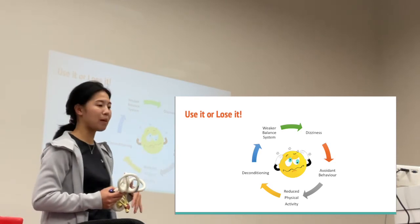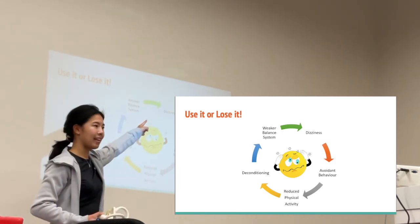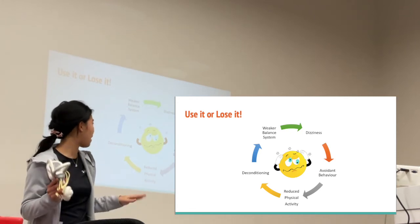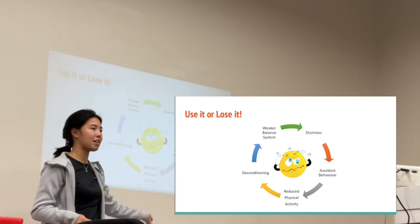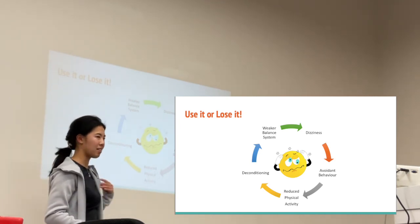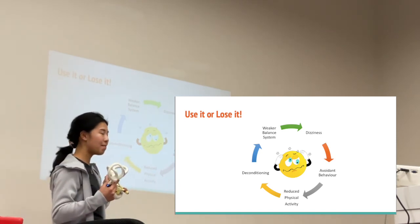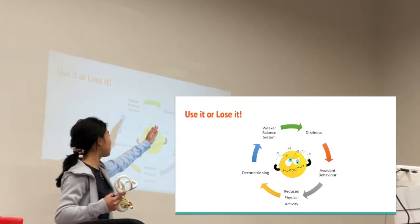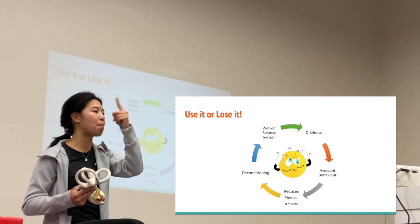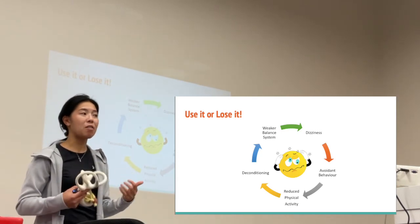This is the vicious cycle that people get stuck in. First, you get dizzy. Once you get dizzy, you avoid movements that make you feel dizzy or unbalanced. Then you stop exercising and stop moving around — you don't go for daily walks anymore. Your muscles get weaker, you become more deconditioned, you have a weaker balance system. Your inner ear is not stimulated anymore because you've stopped moving your head. Now once you do try to move your head, you feel even more dizzy than before, and you're stuck in this vicious cycle where you keep avoiding but the dizziness keeps getting worse and worse. Where we come in is to get you out of this cycle.